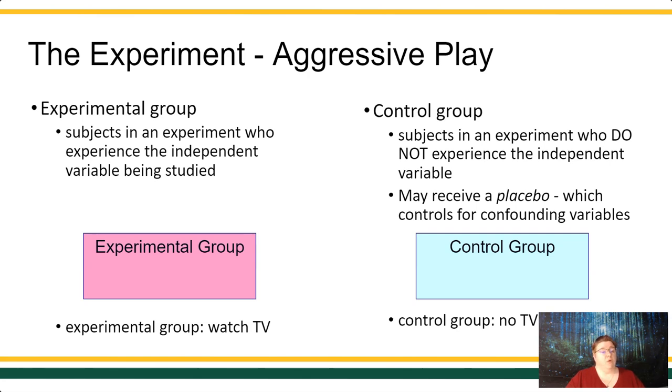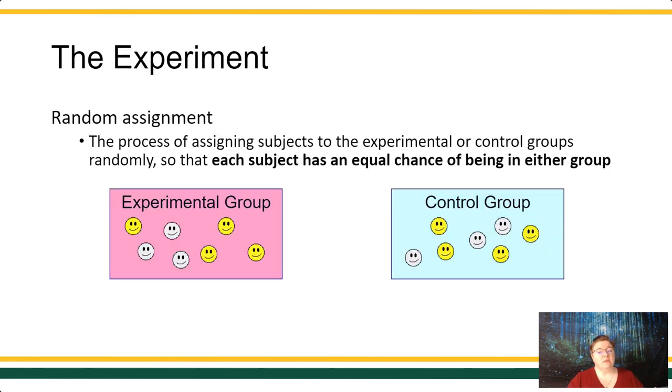It's important, though, for you to use a between groups design, you absolutely have to have something called random assignment. And random assignment means that everyone in your participant pool had an equal chance of being in either the experimental group or the control group.